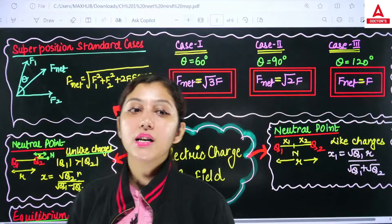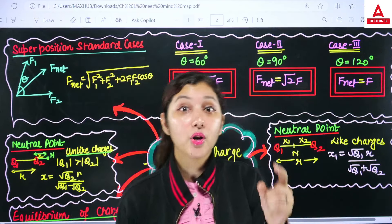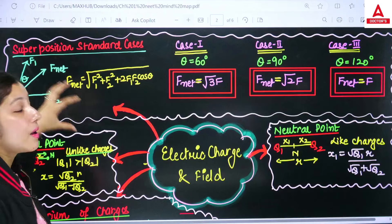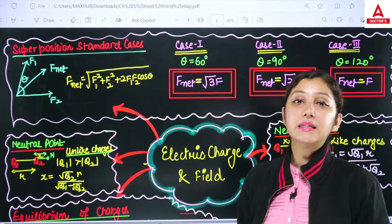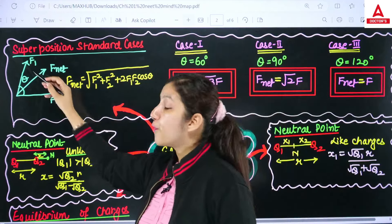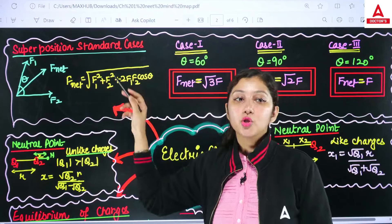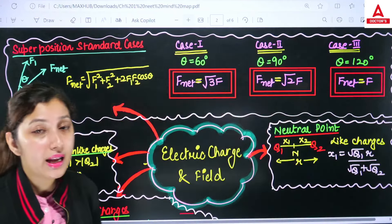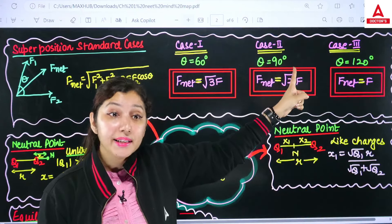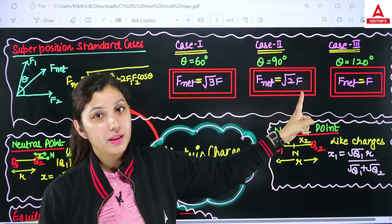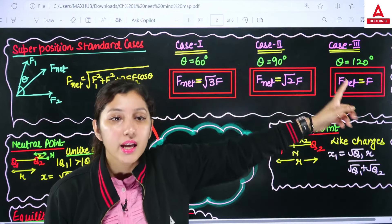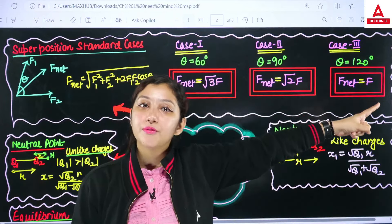For the resultant of two vectors, the general formula is: resultant = √(A² + B² + 2AB cosθ), where θ is the angle between them. Standard cases to remember: if θ = 60°, the net resultant is √3 F; if θ = 90°, the net resultant is √2 F; if θ = 120°, the net resultant equals F. These apply to both force vectors and electric field vectors.